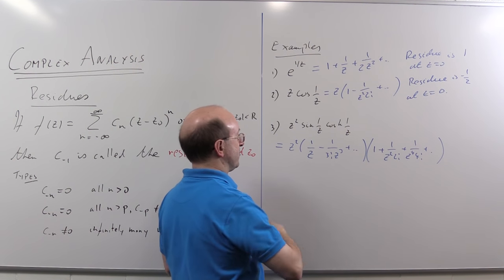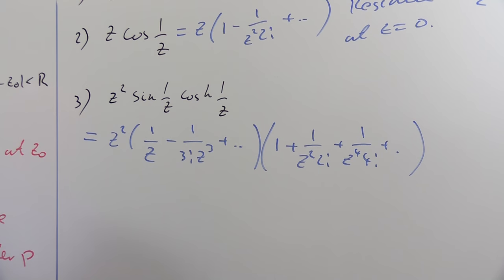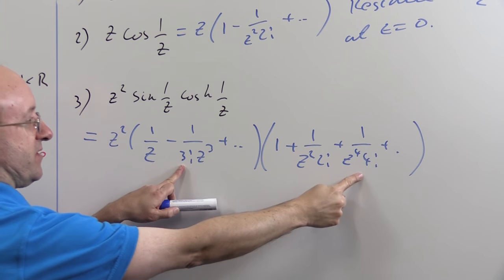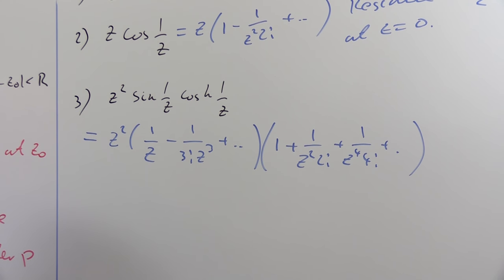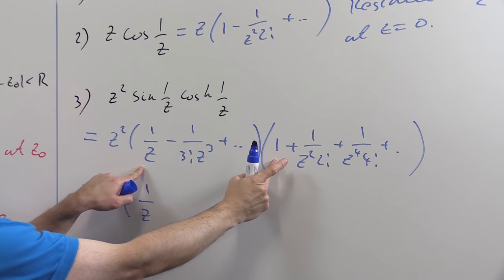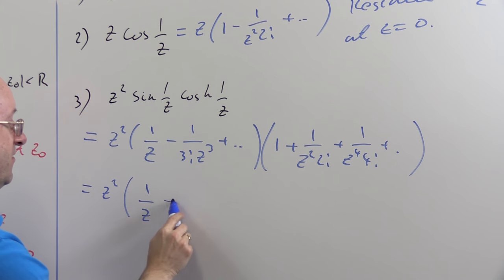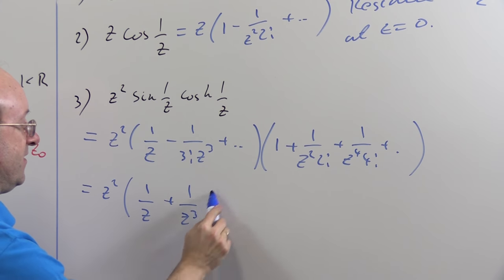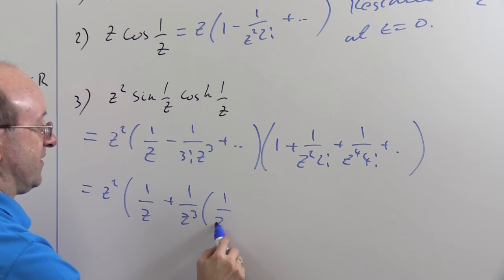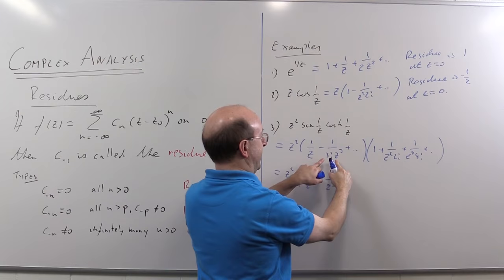So what I need is the coefficient of 1/z. Well in order to get that what I need is the coefficient of 1/z³ when I multiply those two terms together. In fact I might as well multiply them out as far as I need. z² into... well I'm going to get a 1/z from that term times that term. I'm going to get a 1/z³ from this one times that one.